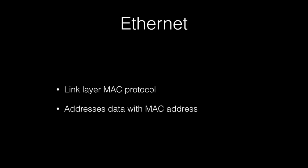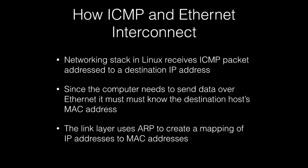After talking about ICMP, which is the internet layer protocol that Ping uses, we now need to talk about the link layer we will be using. In this case, we are going to be using a MAC protocol called Ethernet, where MAC stands for Media Access Control. The main thing we need to know about Ethernet is that it addresses data between two different hosts based on the MAC address. Now that we know ICMP and Ethernet protocols are going to be used to transport our ping request and response, we need to know how these two layers are going to interconnect with each other.